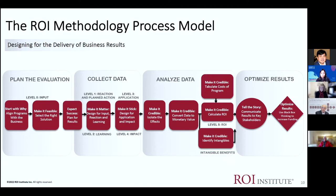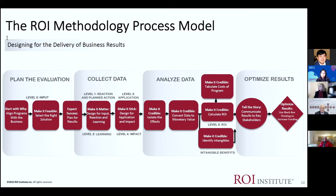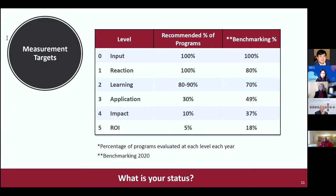We also ensure there are some impacts that are very important intangibles — we leave them as a separate data set but make sure they're connected to the program. Then I've got a story to tell: storytelling is an important part of this. You've got six types of data — reaction, learning, application, impact, ROI, and intangibles — and you use numbers and narratives. Then we use that to optimize results and make it better next time. We call this black box thinking, from the airlines — after a crash, they use the black box to determine the cause and make changes.